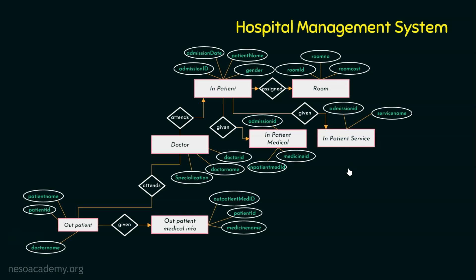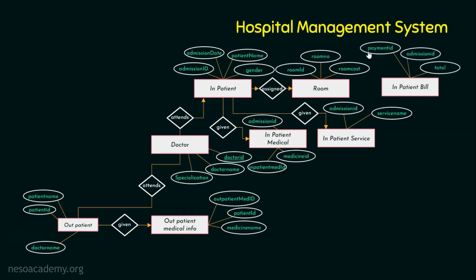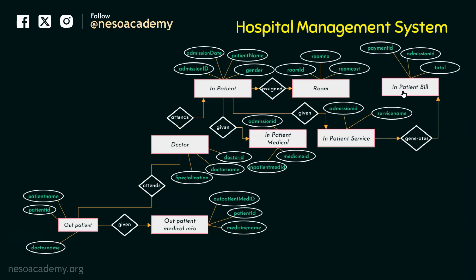We have dealt with the inpatient service. When patients get the service, they have to pay for it. So the next entity is inpatient bill generation, described by attributes payment ID, admission ID, and total amount. The service that this patient has taken is linked with the inpatient bill with a relationship called generates. For each inpatient service, a separate bill has to be generated, so I am maintaining a one-to-one relationship.